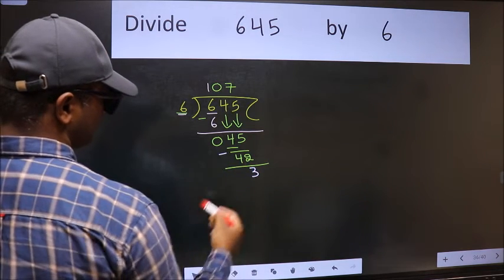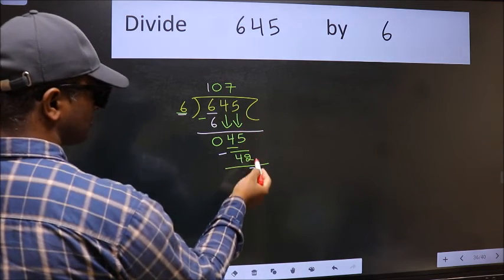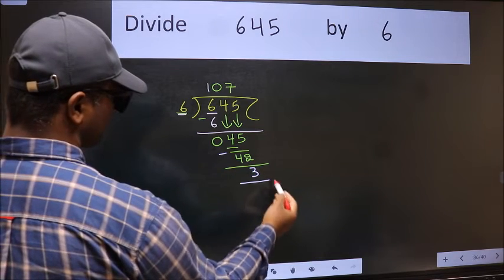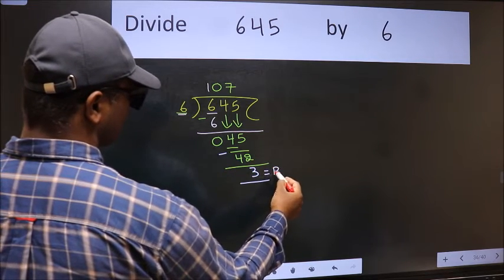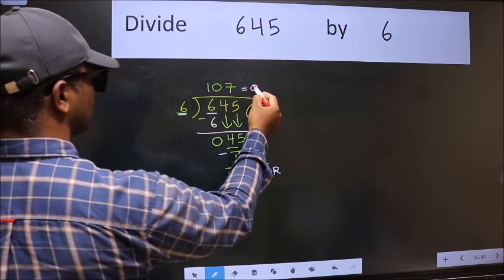We get three. No more numbers to bring down, so we stop here. This is our remainder and this is our quotient.